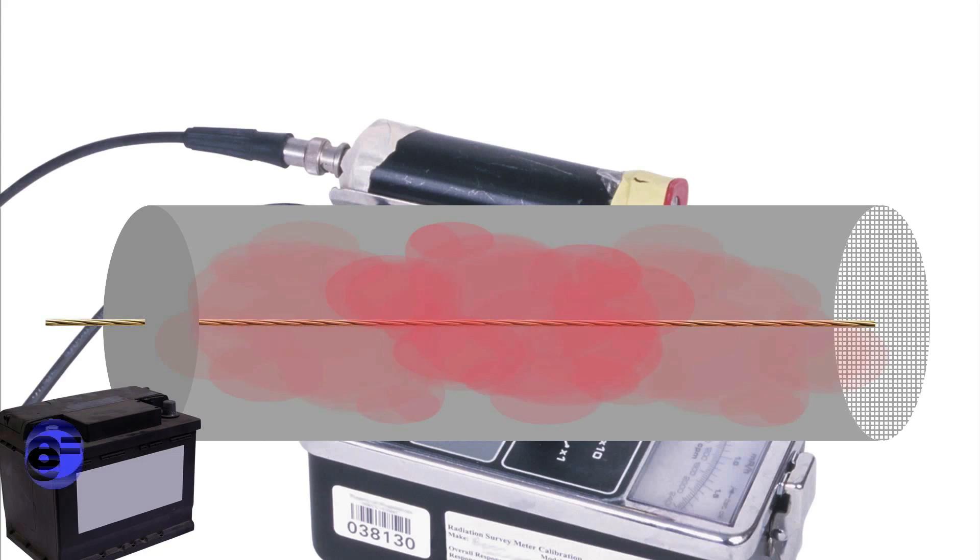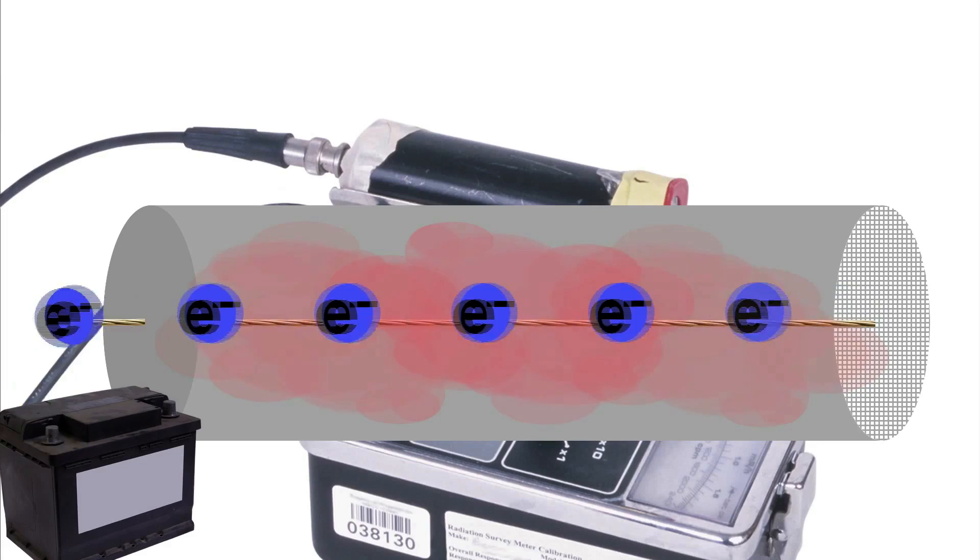Electronic components in the box produce a high voltage that charges the wire, creating an electric field between the wire and the tube.